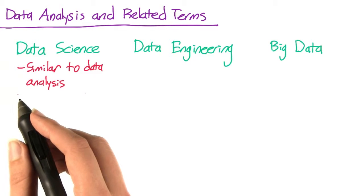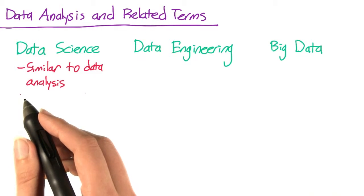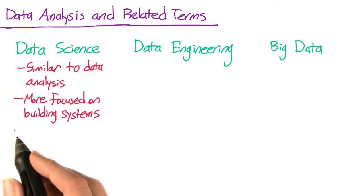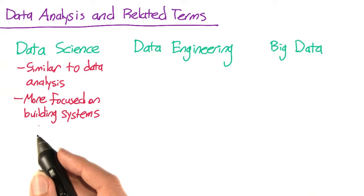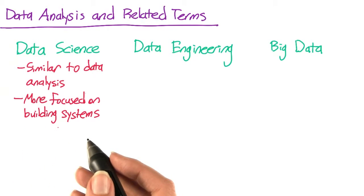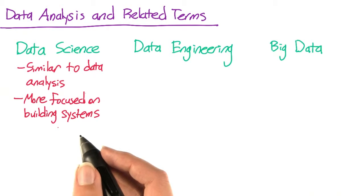I often hear people use the terms data analysis and data science interchangeably. However, to the extent that there is a difference, in my experience, data science is a little more likely to refer to building some sort of a system, like a recommendation system or a ranking algorithm, while a blog post or a paper is more likely to be referred to as data analysis.